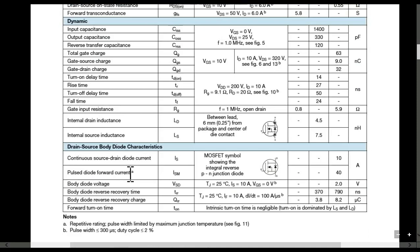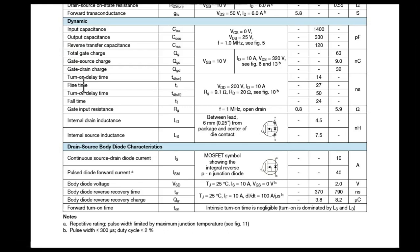The dynamic characteristics include input capacitance, output capacitance, reverse transfer capacitance, total gate charge, and gate-source charge. These dynamic parameters define the switching speed of the MOSFET. While selecting your MOSFET you have to verify that your switching frequency is compatible with the MOSFET you are selecting.